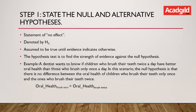Step one: state the null and alternative hypothesis. What is the null hypothesis? It is a statement of no effect — it states that there is nothing new we can learn from the observations. It is denoted by H₀ and is assumed to be true until evidence indicates otherwise. The whole purpose of the hypothesis test is to find the strength of evidence against the null hypothesis.